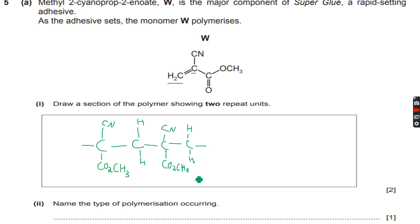As you can see, we have continued the double bonds on both sides, and the CN group, the CO2CH3, the CN, CO2CH3, and these are two repeat units now of this polymer when W polymerizes.